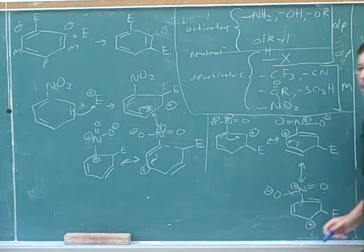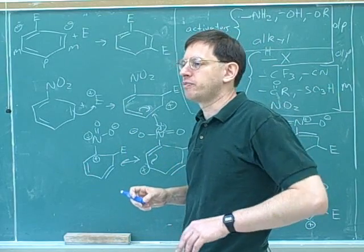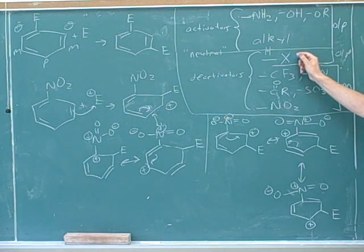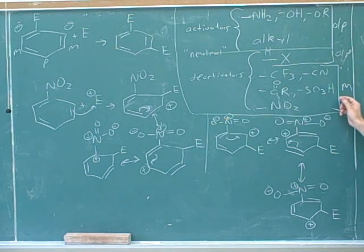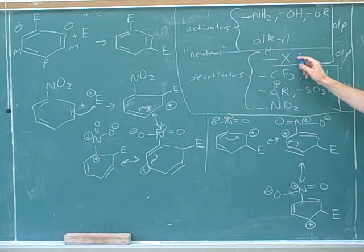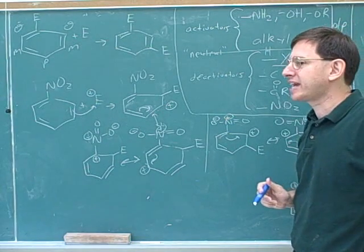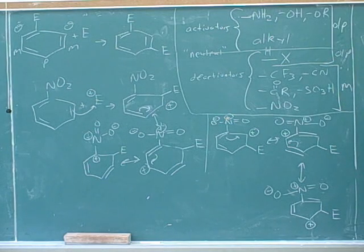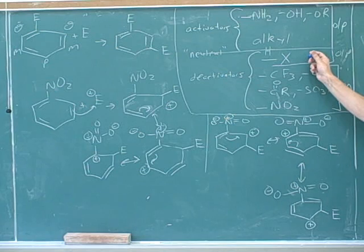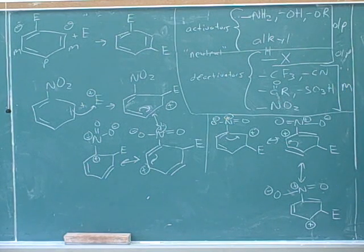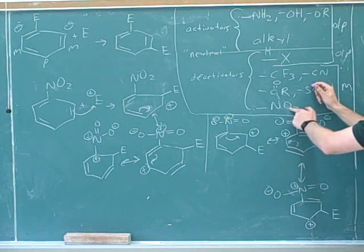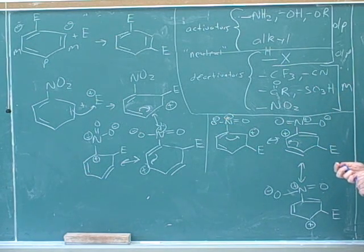Halogens are very complicated because there's a very close competition between the induction and resonance effects, so rather than trying to explain them, we're just going to memorize that they happen to be ortho and para directors, even though they're deactivators. All the other deactivators are meta-directors. The second language book has a valiant attempt to explain why halogens are both deactivators and ortho/para directors. For our purposes, memorize halogens as a special case. You will be expected to explain why activators are ortho/para directors and why deactivators are meta-directors using these resonance structures.